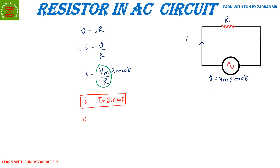So my voltage was vm sine ωt and current is im sine ωt. As you can see, both voltage and current are in phase — there is no phase difference between voltage and current in the case of a resistor.